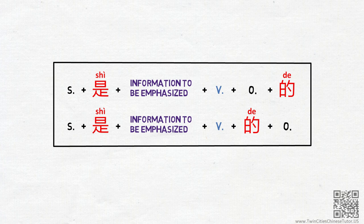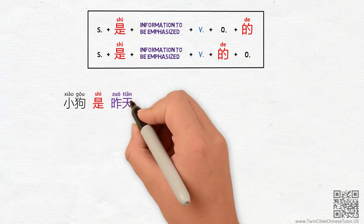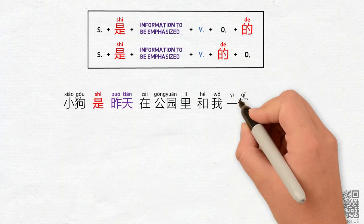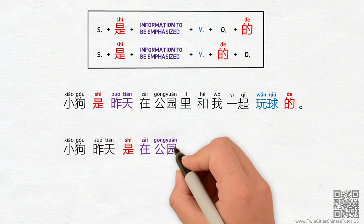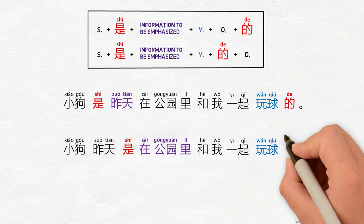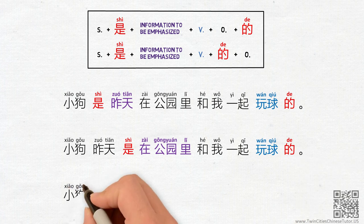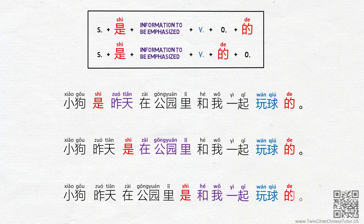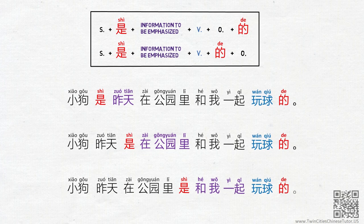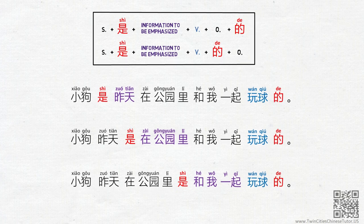Let's take a look at the following examples. 小狗是昨天在公园里和我一起玩球的. 小狗昨天是在公园里和我一起玩球的. 小狗昨天在公园里是和我一起玩球的. While the words in the sentences are exactly the same, by positioning 是 differently, it actually changes the emphasis.